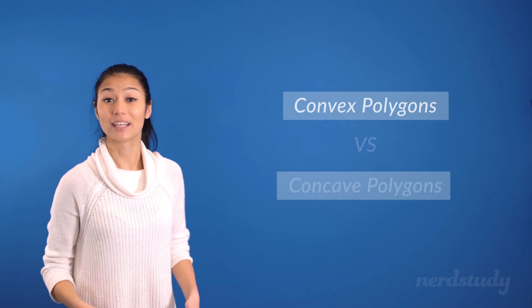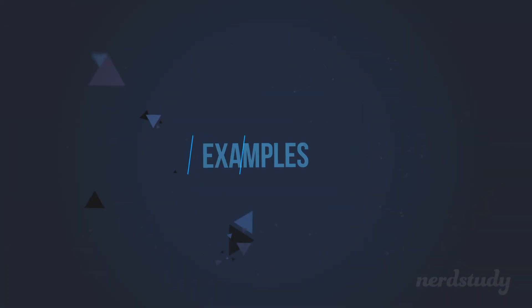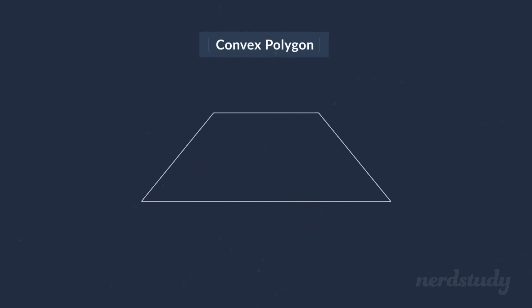And now to finish off this video, let's talk about convex polygons and concave polygons. An example of a convex polygon might look like this. Notice how all of the angles on the inside are less than 180 degrees.